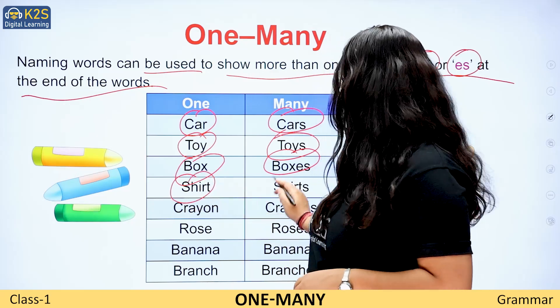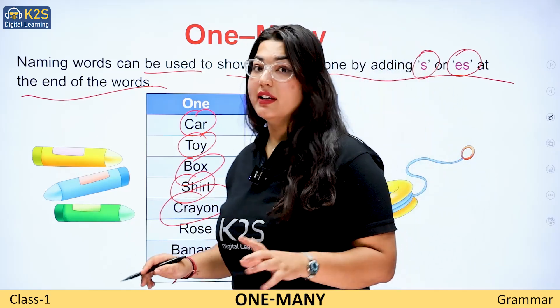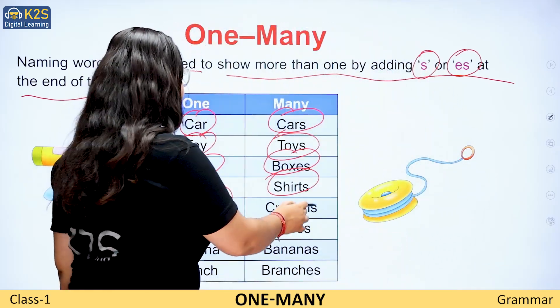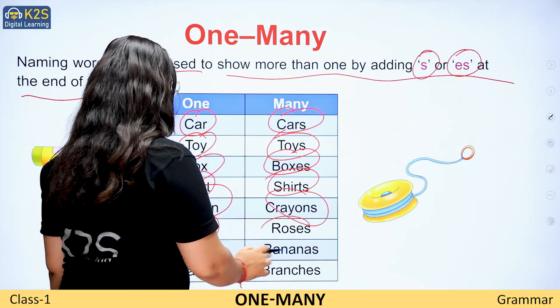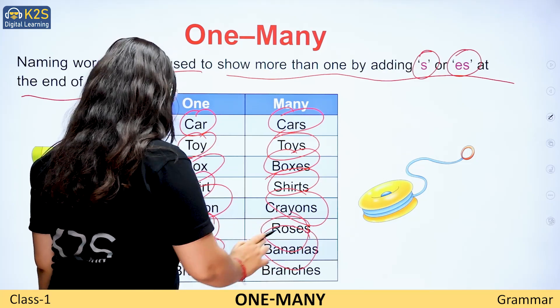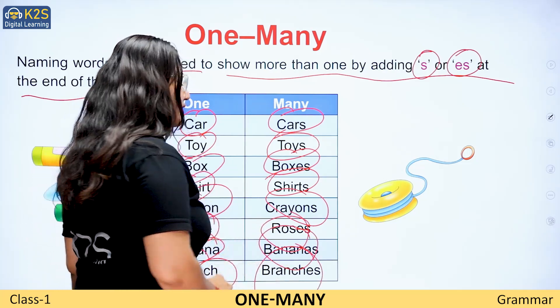Shirt — shirts. Crayon — crayons. Rose — roses. Banana — bananas. Branch — branches.